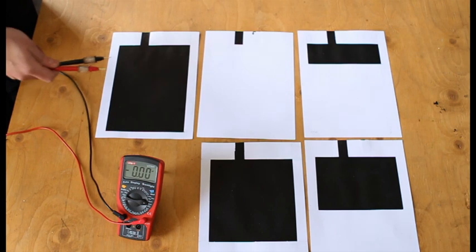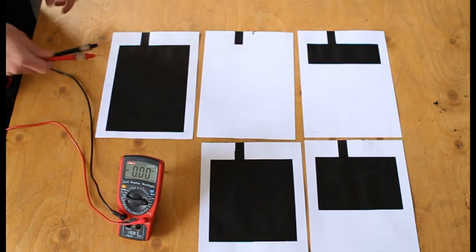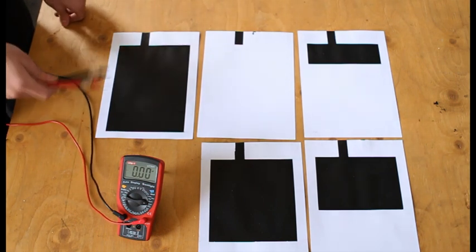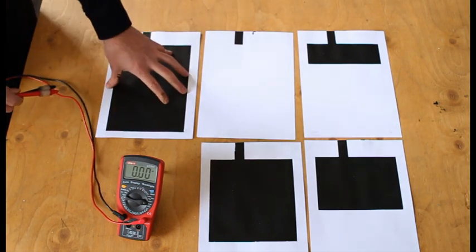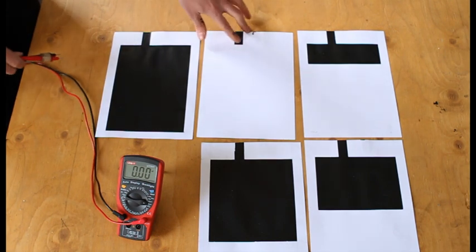So now we're going to test our capacitors. A bit like the resistance tutorial, the amount of paint on the paper really makes a difference in the performance. So you'll notice that we've got one here that's got a lot of paint and one that has almost none at all.